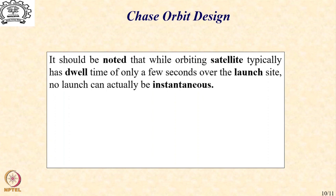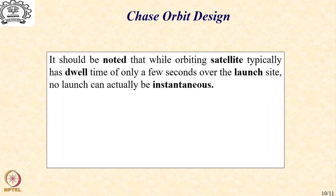How does one design the launch trajectory? In this case, it is essentially the launch trajectory which is directly decided by the requirement of creating a chase orbit for a specific destination. However, we must note that the orbiting satellite typically has a dwell time of only a few seconds over the launch site, since the spacecraft is continuously moving in its orbit and its visibility from the launch point will be only for a few seconds before it moves away due to angular separation. Obviously, you cannot capture that moment because you cannot have impulsive launches.